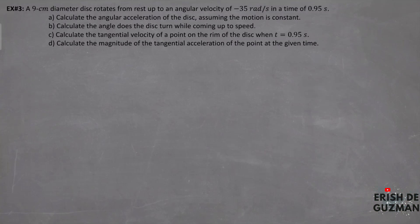Example number 3: A 9 cm diameter disk rotates from rest up to an angular velocity of negative 35 radians per second in a time of 0.95 seconds. Letter A: calculate the angular acceleration assuming constant motion. Letter B: calculate the angle the disk turns while coming up to speed. Letter C: calculate the tangential velocity of a point on the rim at t equals 0.95 seconds. Letter D: calculate the magnitude of the tangential acceleration at that point.